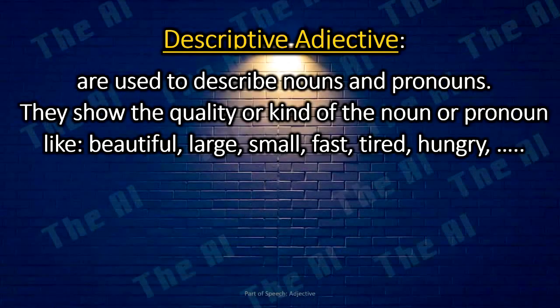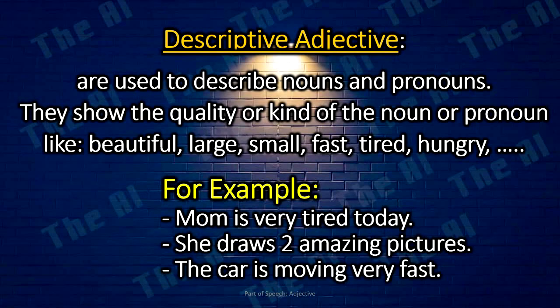Descriptive adjectives are used to describe nouns and pronouns. They show the quality or kind of the noun or pronoun, like beautiful, large, small, fast, tired, hungry, etc. For example: Mom is very tired today. She draws two amazing pictures. The car is moving very fast.